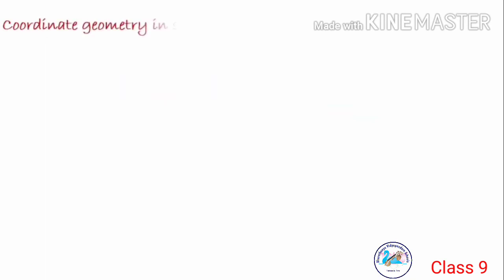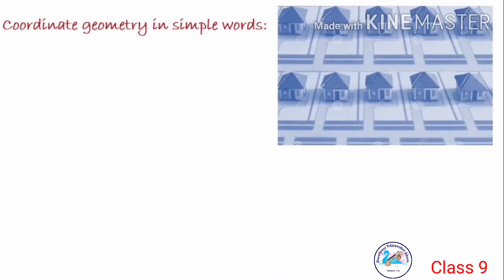Now, let us define coordinate geometry in simple words. Consider a scenario. Suppose you are planning to visit your friend's house for the first time. He has given you his house number, that is house number 4. House number 4 is a landmark given to you by your friend. And when you reach the place, you have seen two rows of houses numbered 1 to 5. In the first row, houses are numbered 1 to 5, and in the second row also, houses are numbered 1 to 5. Means, if you use only the house number, there are two houses with the same number 4.